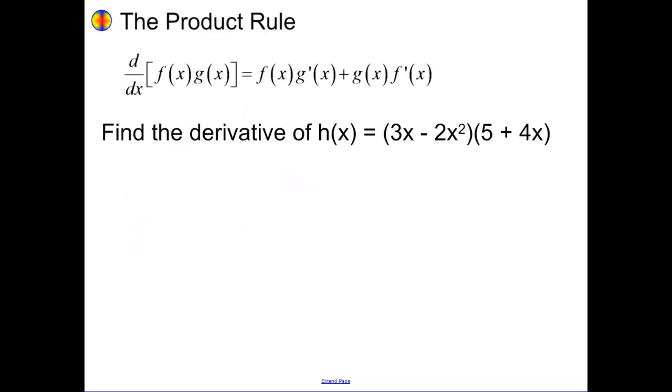Product rule. Product rule is if you have two functions that are being multiplied to each other. It's leave the first alone, derivative of the second, plus leave the second alone, derivative of the first. You can't just go through, this does not equal f prime of x times g prime of x. You have to go through and you have to use our product rule.